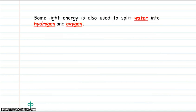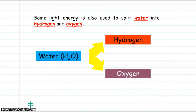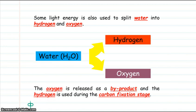Some light energy is also used to split water into hydrogen and oxygen. The oxygen is released as a byproduct, and the hydrogen is used during carbon fixation stage.